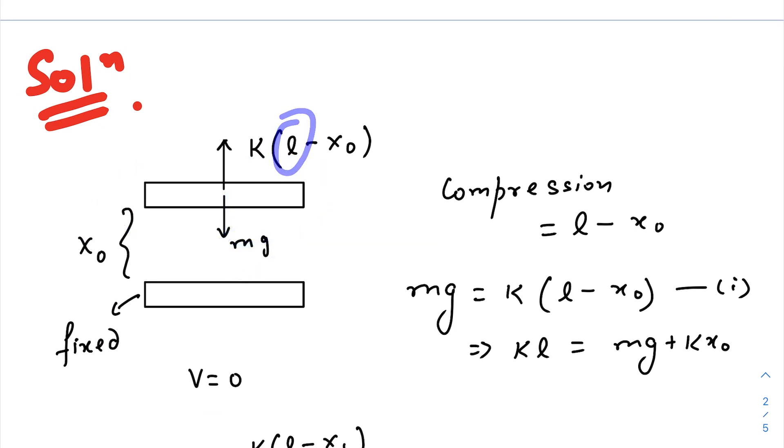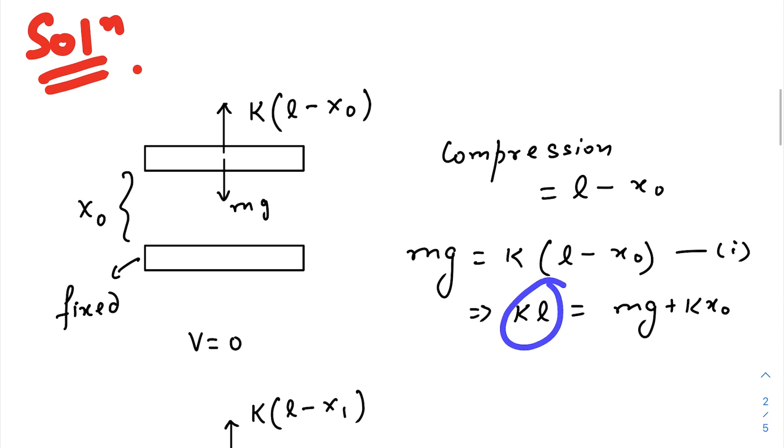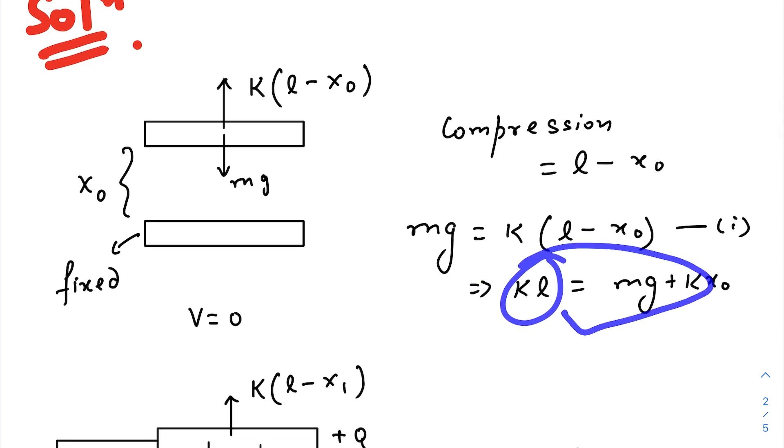I have considered l as the natural length of the spring, so compression of the spring is l minus x naught. Because in the question they have said that this one is x naught. So in equilibrium condition, mg will be equal to this one. From here we will be using k l. We will be using this one in our future equations when V is applied.